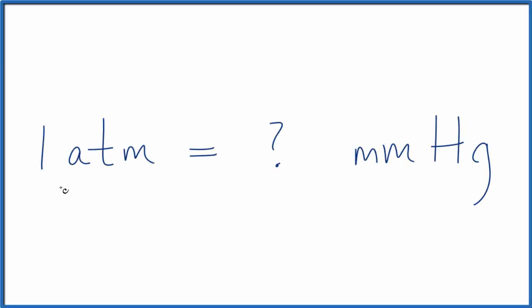In this video, we'll look at how we convert one atmosphere to millimeters of mercury. So the question is: one atmosphere equals how many millimeters of mercury? It turns out that you really just have to memorize this.